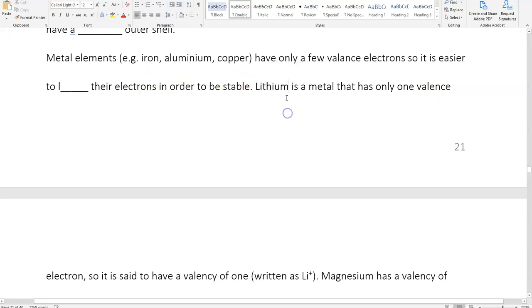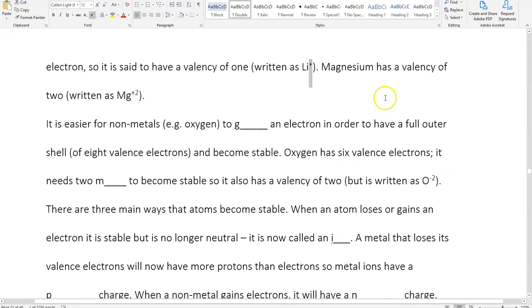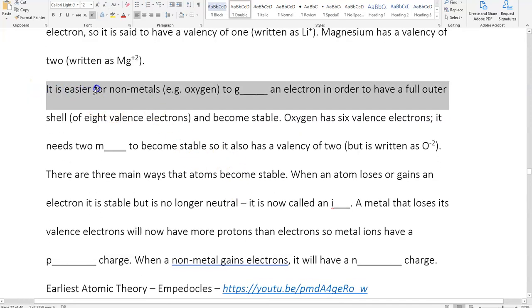Lithium is a metal that has only one valence electron. So it is said to have a valency of one, written as Li+. The idea is that when you lose an electron, it's kind of like when you lose a toxic friend, suddenly you're really positive. Magnesium has a valency of two, written as Mg2+. It is easier for nonmetals, for example oxygen, to gain an electron in order to have a full outer shell of eight valence electrons and become stable. Oxygen has six valence electrons, it needs two more to become stable, so it has a valency of two, written as O2-.